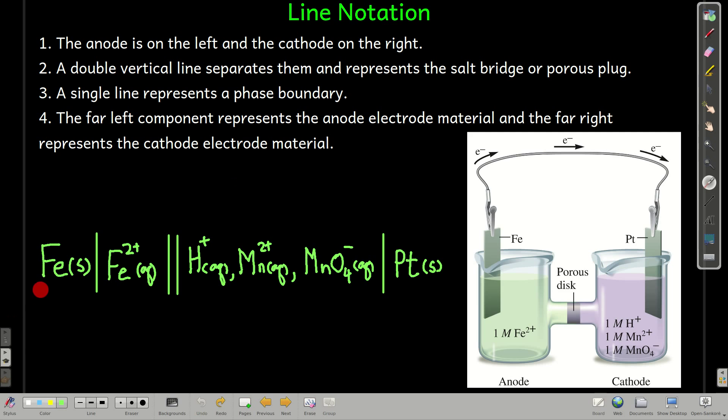We start out on the very left with what the anode electrode, the piece of metal that's right here is made of. In this case, it's iron, so we put iron solid, then a single line because there's a phase boundary and what's inside of this half cell here, it's iron two, aqueous iron two. And these are all one molar, they're standard states.